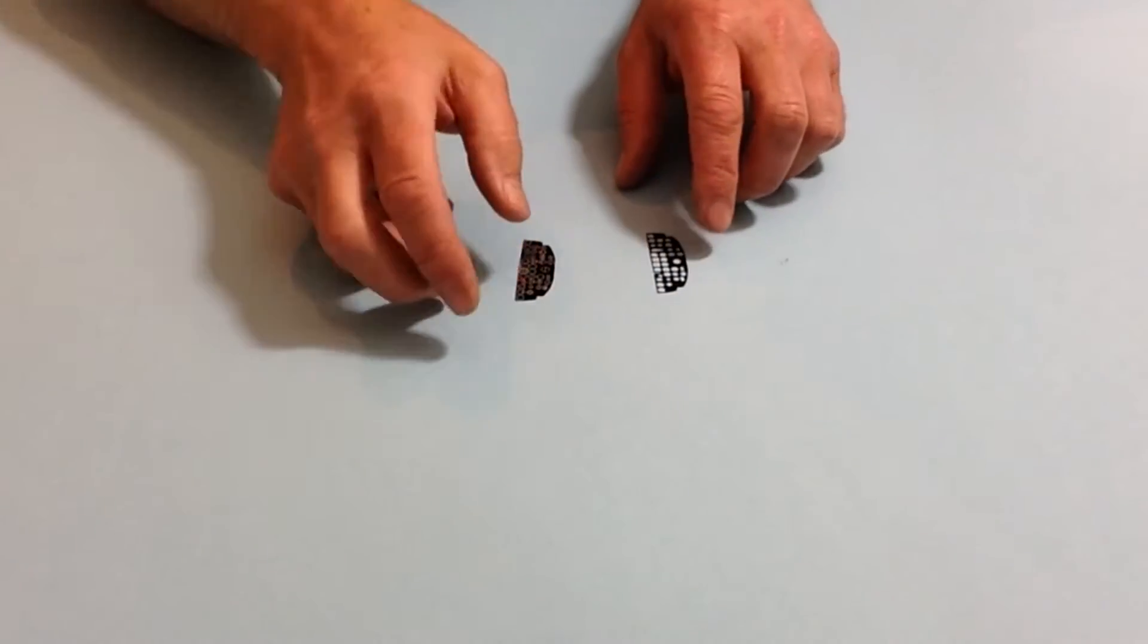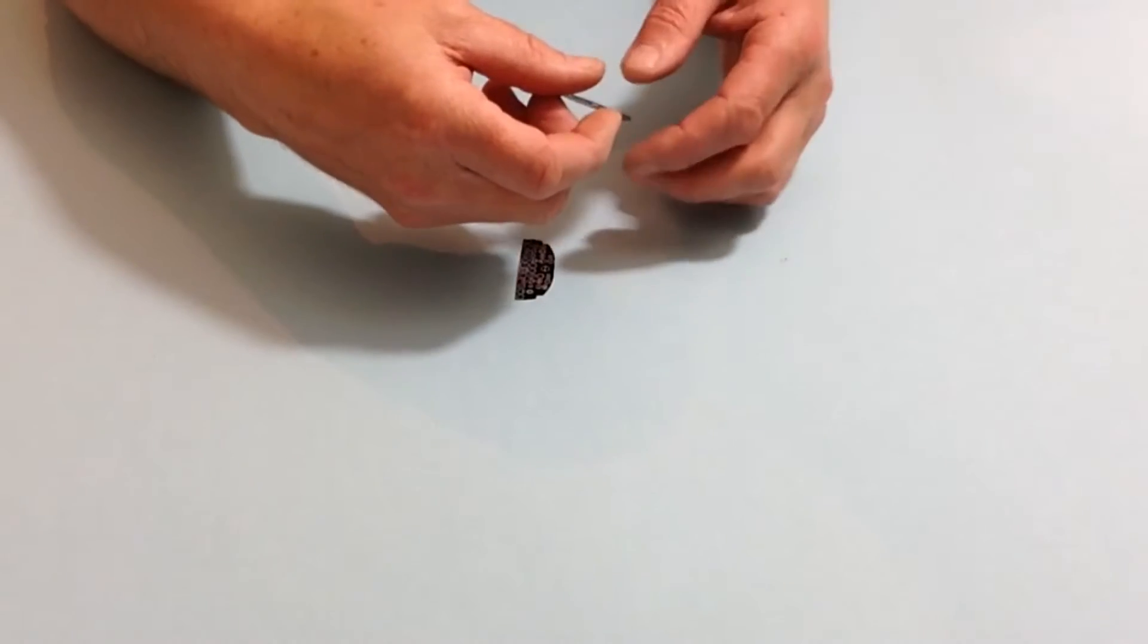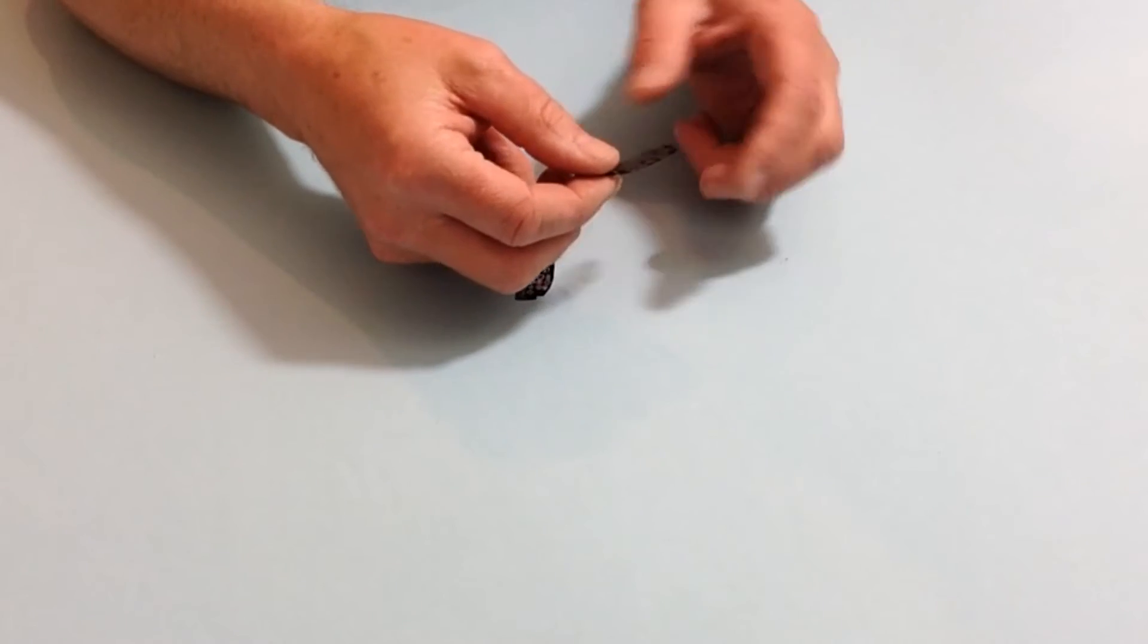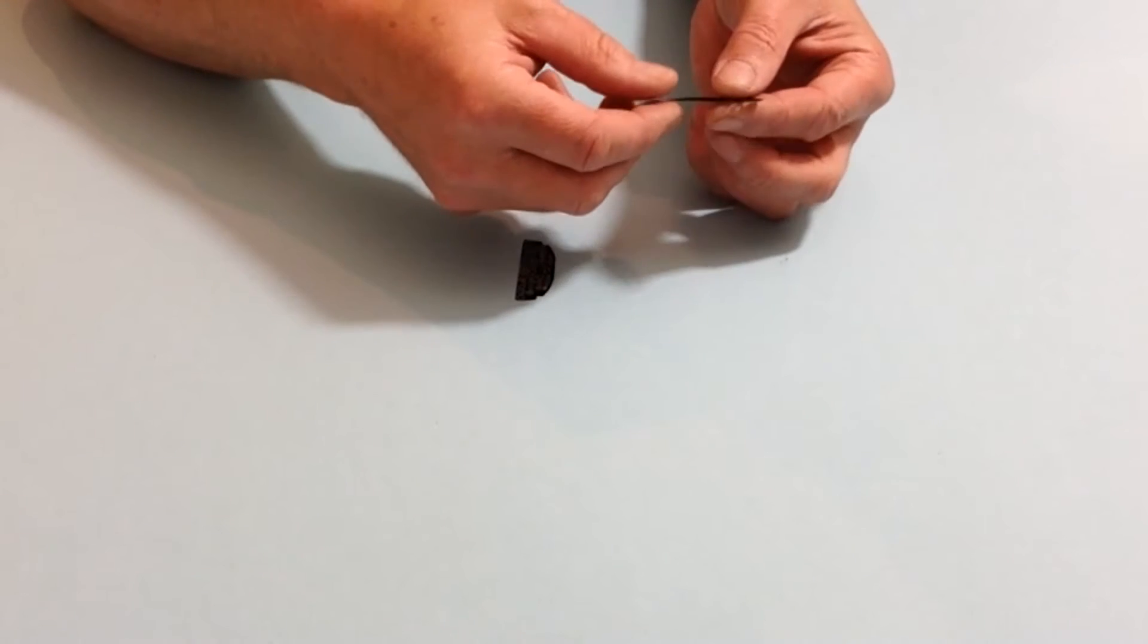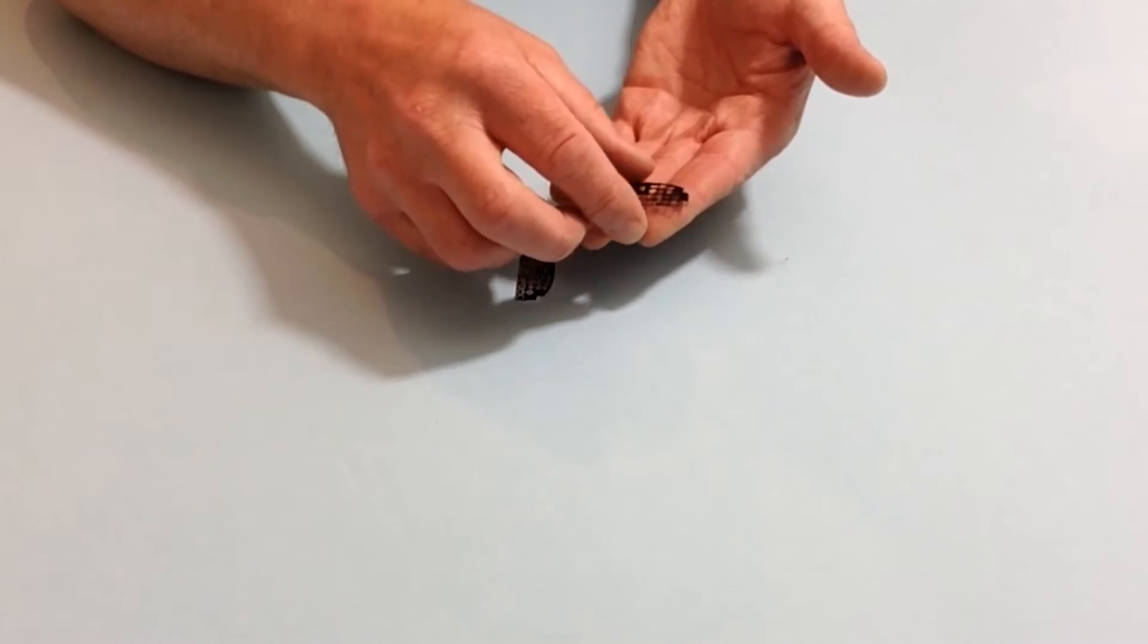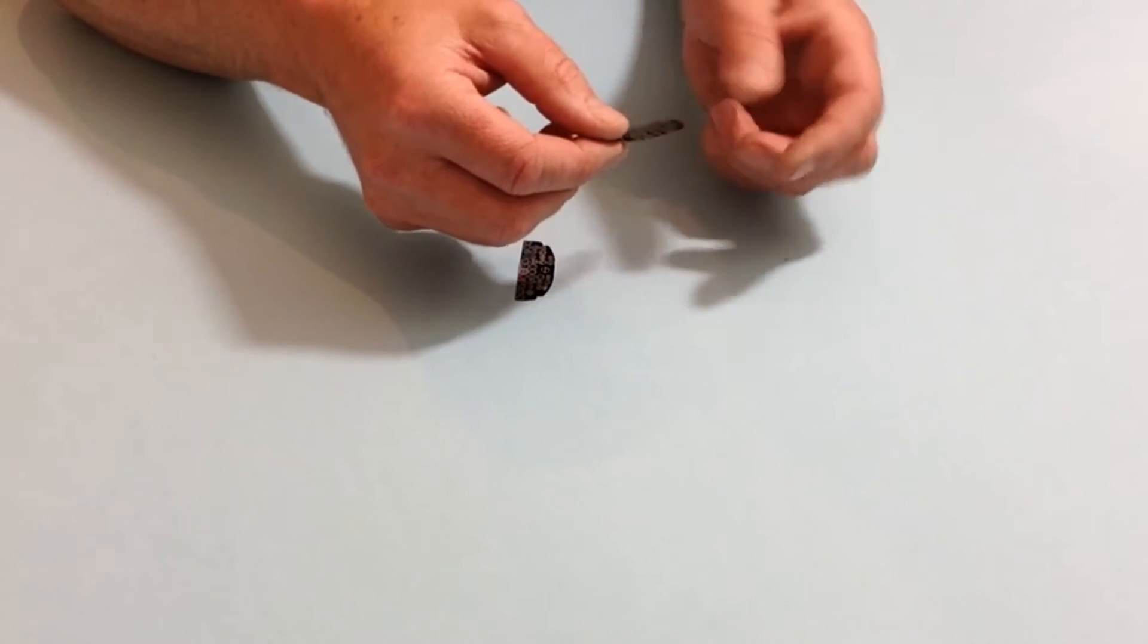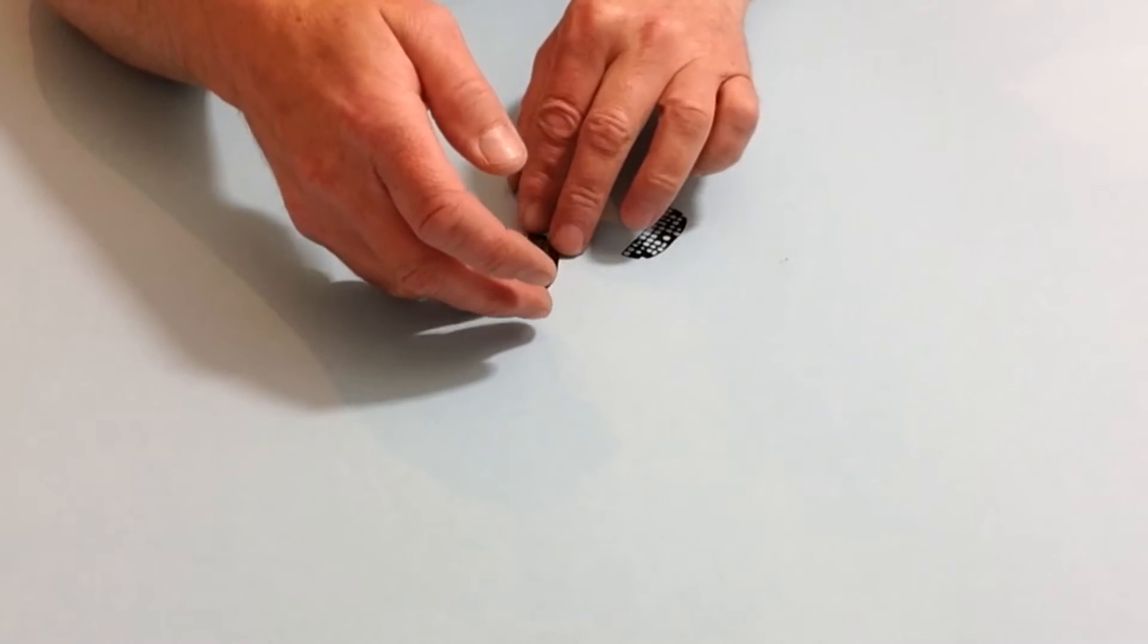Now on page 17 you're going to be doing the instrument panel. Remove part S37 from its fret, then prime it and paint it black. You can pick out some small details if you wish before cutting out the backing.